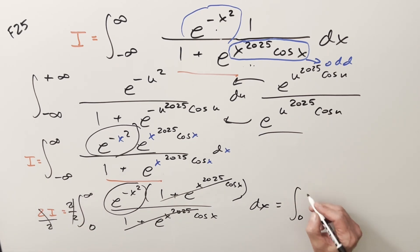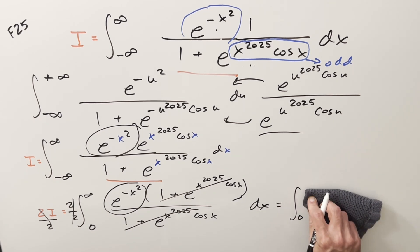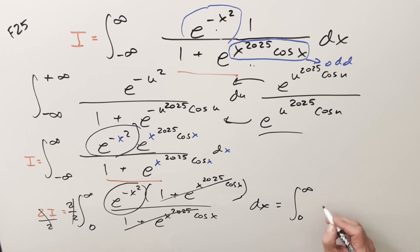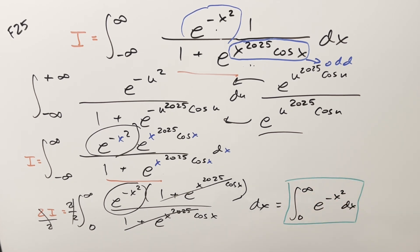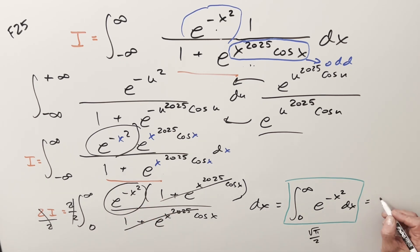So we're left with the integral from 0 to infinity of e to the minus x squared dx. This is the Gaussian integral, which we know by memory. This equals square root of pi over 2. If we had kept it from minus infinity to infinity, that's square root of pi, but with the one-half it's the same result. So the final answer is square root of pi over 2.